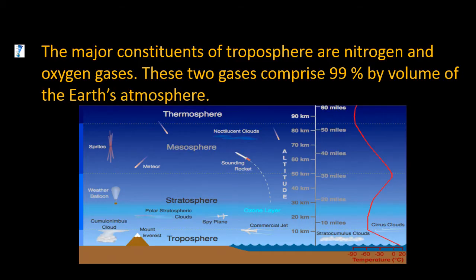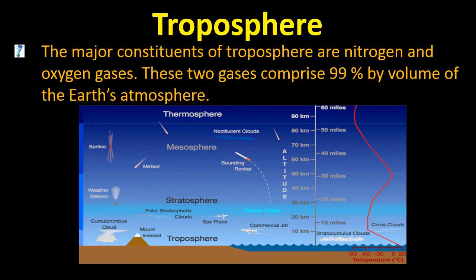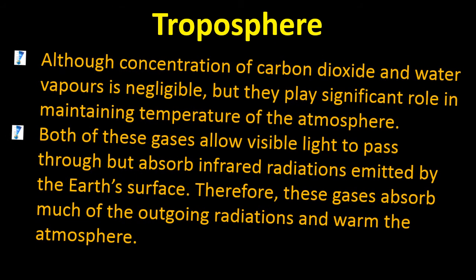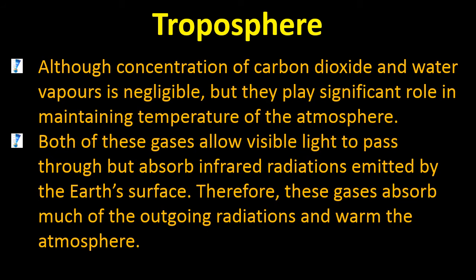The major constituents of troposphere are nitrogen and oxygen gases. These two gases comprise 99% by volume of the Earth's atmosphere. As we are living in the troposphere, oxygen is very necessary for us and is present in large amounts. In the troposphere, the concentration of carbon dioxide and water vapours is negligible, but please remember they play a significant role in maintaining the temperature of the atmosphere.